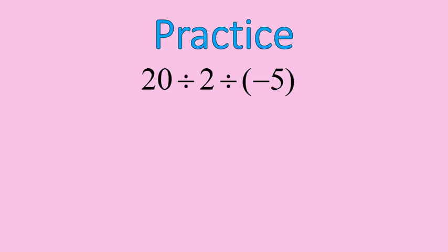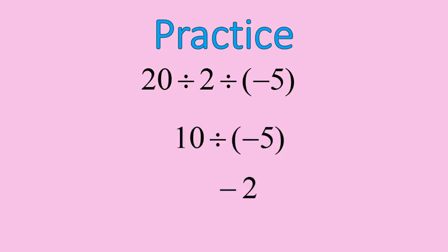Now it's time to do some division. Go ahead and pause the recording and divide these numbers. Welcome back. 20 divided by 2 is 10; 10 divided by 5 is 2. Because it's a positive divided by a negative, the answer is going to be negative. There is one negative in the question — 1 is an odd number — therefore we end up with a negative answer.